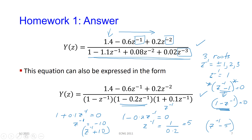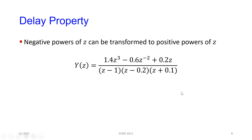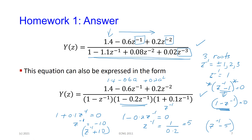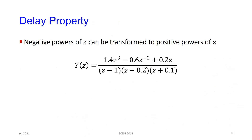Those sort of manipulations — if you're having issues with that, you can always express this as 1.4 minus 0.6A plus 0.2A squared, where A is Z to the minus one, just until you get the hang of it. Z to the minus one is the sort of unit you're dealing with there.